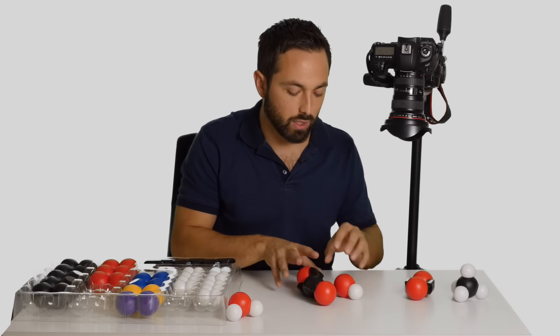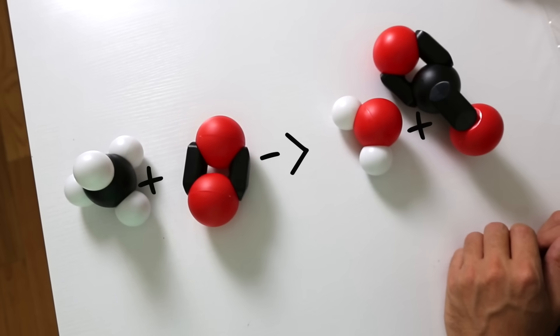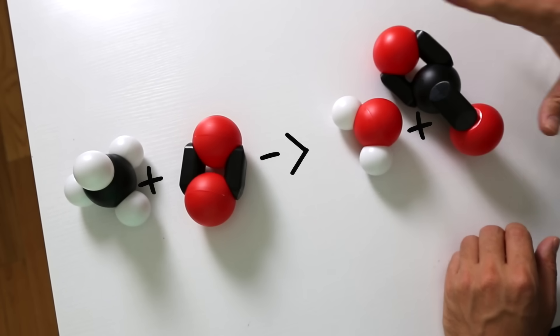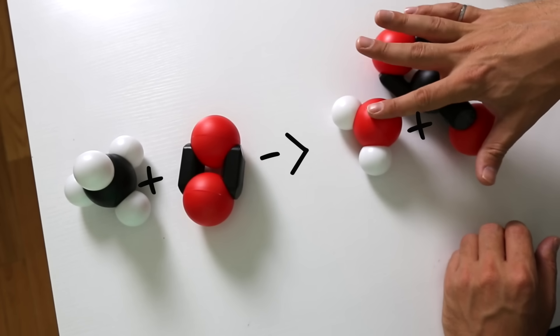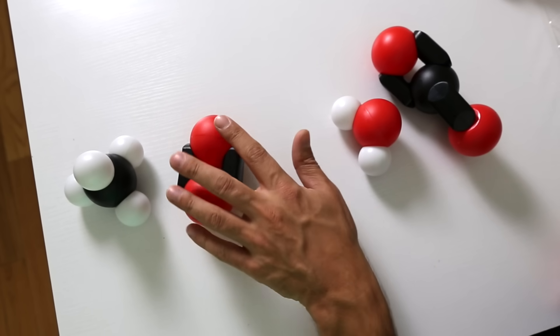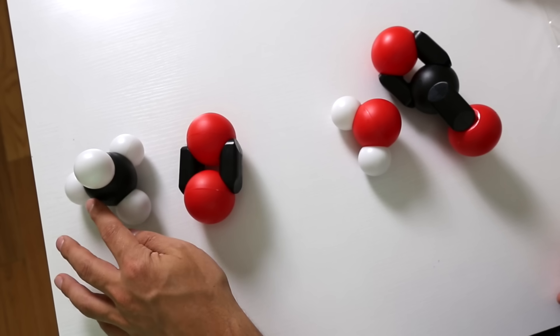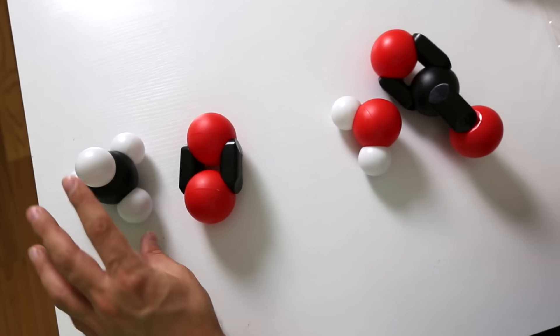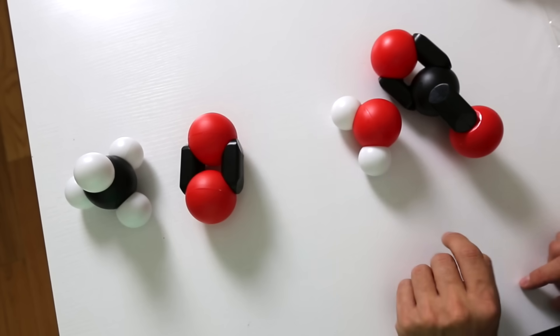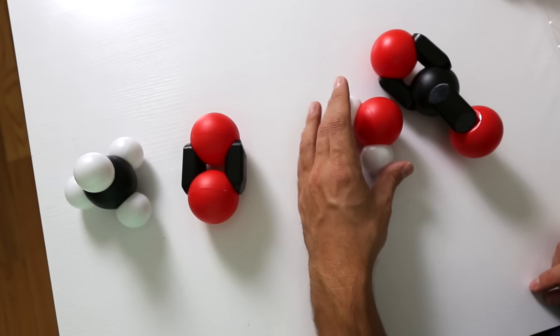So these are our reactants and these are our products. Now if we look here on the right hand side there's one, two, three oxygen atoms and over here there's only two. Over here there's one carbon, here there's one carbon so that's good. And we've got one, two, three, four hydrogens. Here there's only two hydrogens.